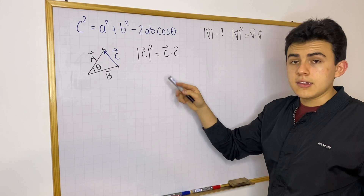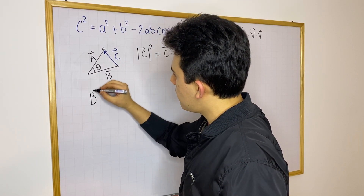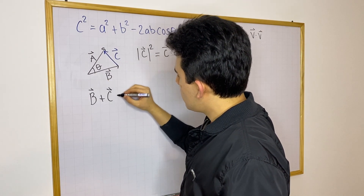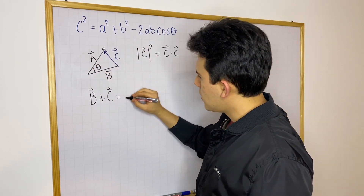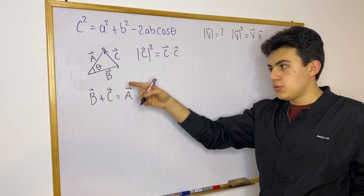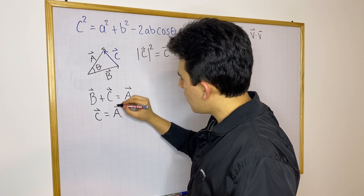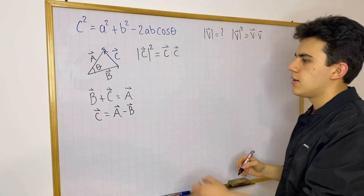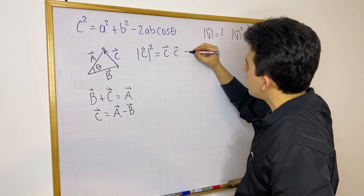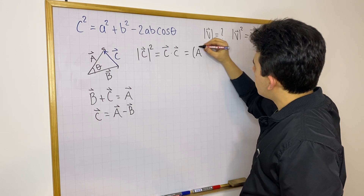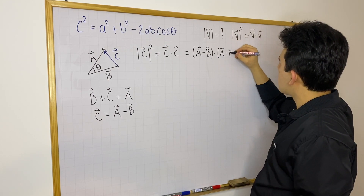Now, is there any way we can rewrite C? Yes. Using this triangle, we have the relationship between A, B, and C. If we go from B's tail, move along B, and then go along C, this is the same as traveling A. So B plus C equals A, which means C is simply A minus B. So instead of writing C dot C, we can say this equals vector A minus vector B, dotted with vector A minus vector B.